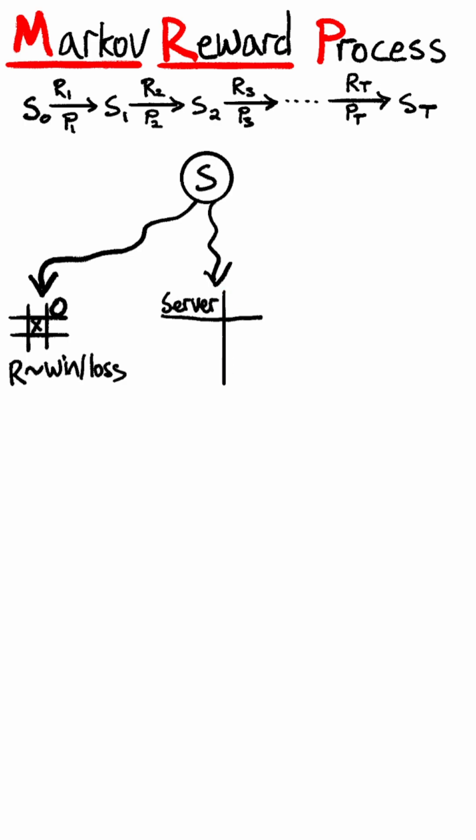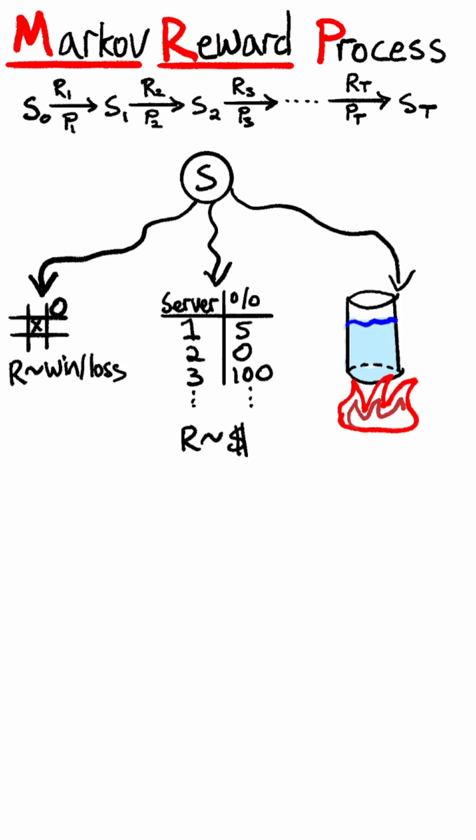If the states represent a data center server utilization, the reward could be money earned from customers. And if the states represent a chemical reaction, the reward could be the quantity of output.